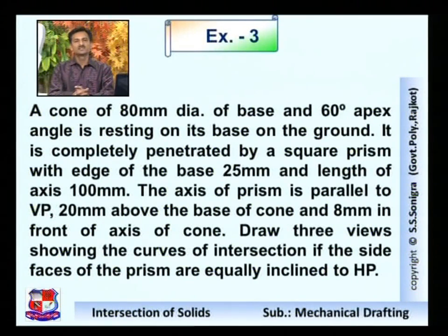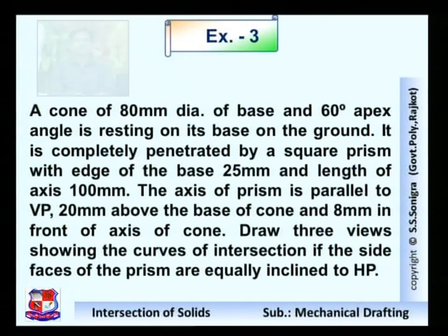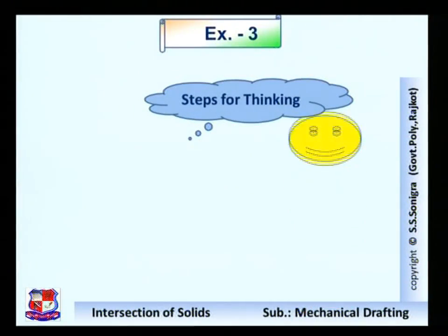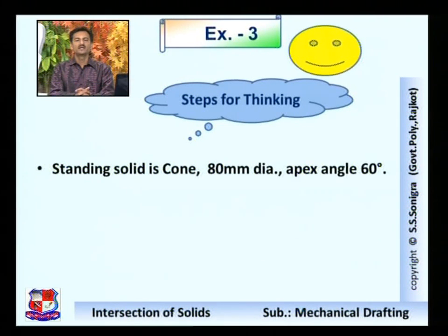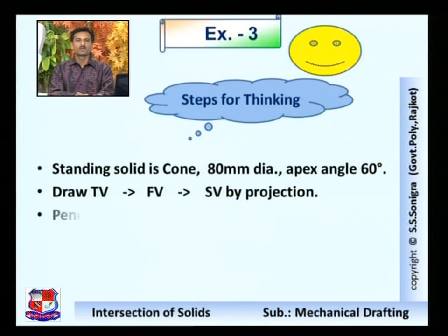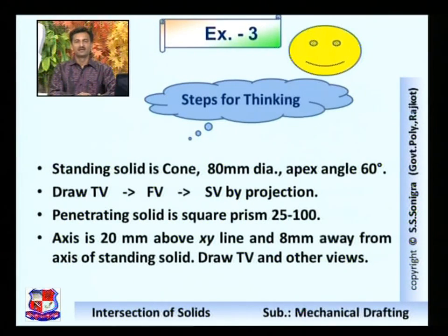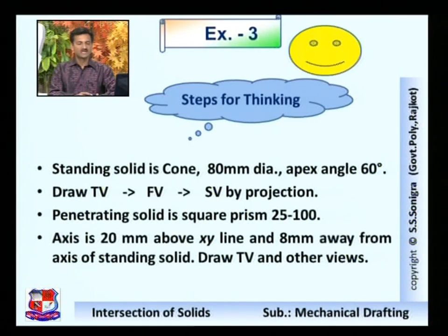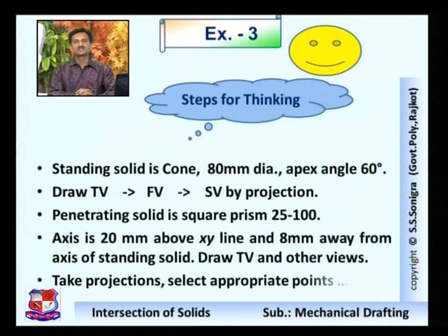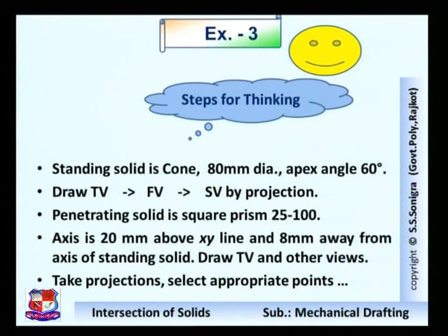In this problem, the cone has diameter 80 mm but the height is not given — the apex angle is 60 degrees. The penetrating solid is a square prism. Steps for thinking: first, standing solid is a cone — 80 mm diameter, apex angle 60 degrees — draw top view, front view, side view by taking projections. Penetrating solid is a square prism, side length 25 mm, height 100 mm, axis 20 mm above xy line and 8 mm away from the axis of the standing solid. Start from top view and side view, take projections, select appropriate points, and solve the problem.